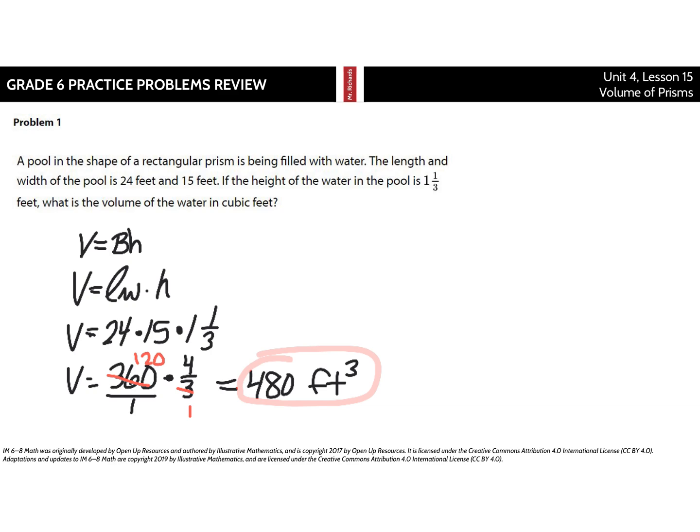Today's grade 6 practice problems review is on unit 4 lesson 15, the volume of prisms, and we're still using our fractions here. In problem 1, a pool in the shape of rectangular prism is being filled with water. The length and width of the pool is 24 feet and 15 feet. If the height of the water in the pool is one and one-third feet, what is the volume of the water in cubic feet?